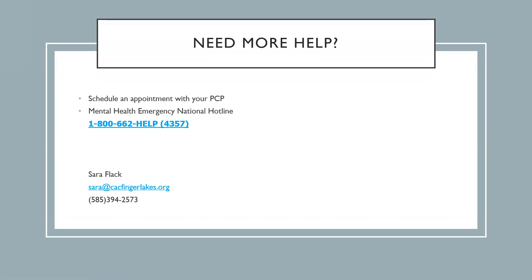Those are just things to keep in mind when preparing for an initial appointment with your primary care provider. If you have a mental health emergency, the national hotline is 1-800-662-HELP, or 1-800-662-4357. As always, if you have any other questions or are looking for more resources, you can reach me by email at sarah@CACFingerlakes.org, or by calling our Child Advocacy Center's main number at 585-394-2573. Thank you.